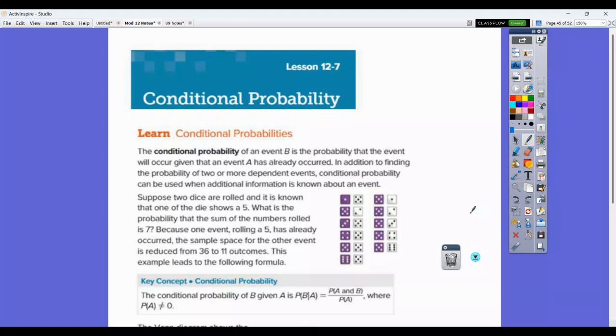12.7 is over conditional probabilities. So the conditional probability of an event B is the probability that the event will occur given that an event A has already occurred. So they're based on a condition that occurs so that A has already occurred. In addition to finding the probability of two or more dependent events, conditional probability can be used when additional information is known about an event.